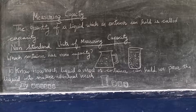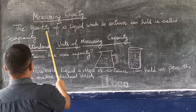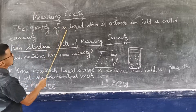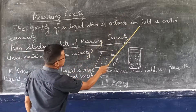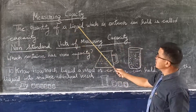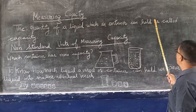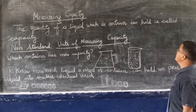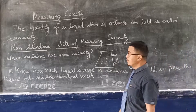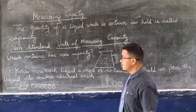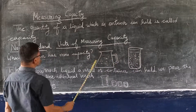Hello Class 3. Today in Maths, Chapter 7 - Measurement, we will deal with measuring capacity. The quantity of liquid which a container can hold is called capacity. Now we will look at standard and non-standard units of measuring capacity.